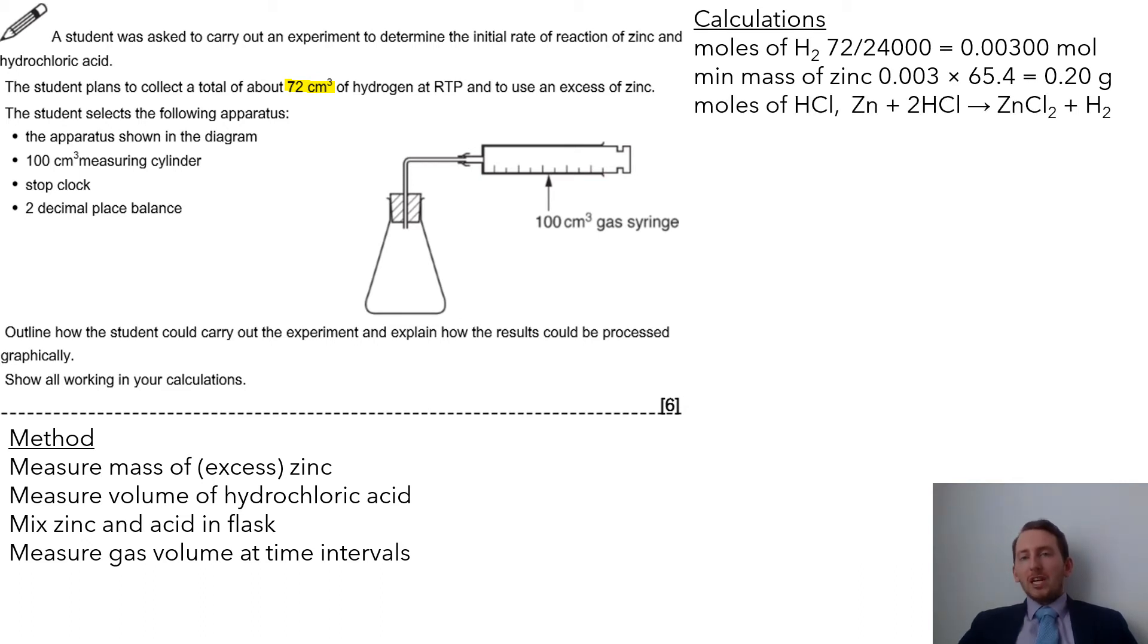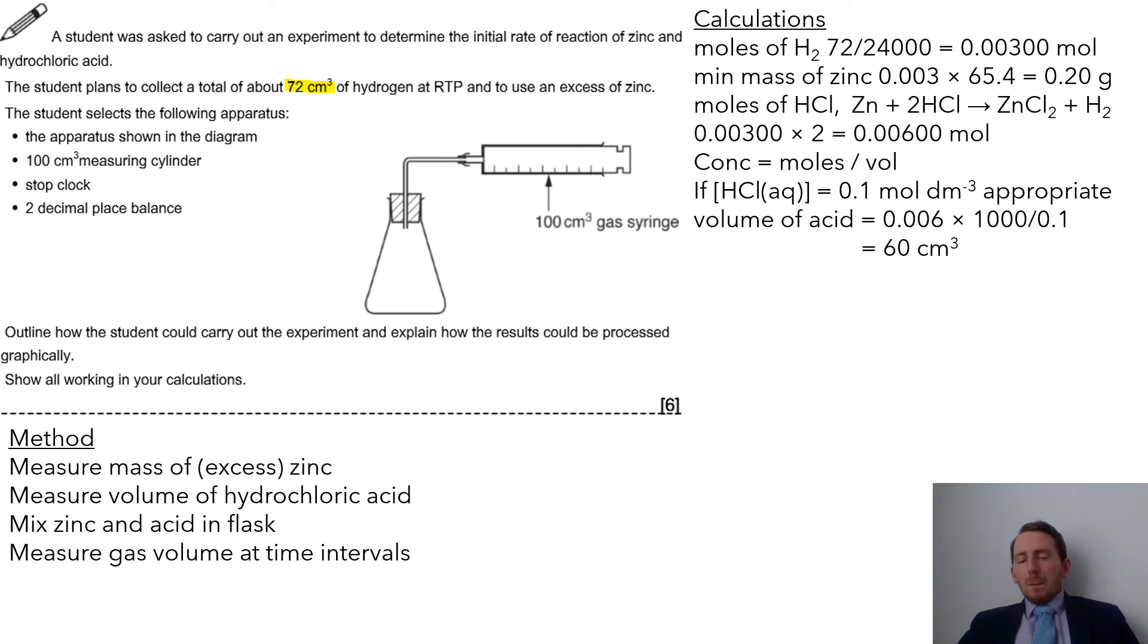If you want to work out the moles of HCl, this is where things can get a little bit tricky. We've written down the equation that we need - sometimes it's given to you, sometimes it's not. We can then see that the ratio of HCl to hydrogen is a 2 to 1 ratio. So we can take the moles of hydrogen and times up by 2. That gives us the moles of hydrochloric acid. Now we want to work out the concentration of my HCl. I've just written out moles divided by volume. So if I have a concentration, this is where there's some assumption going on here. If I have a concentration of say 0.1, what would the appropriate volume of acid be?